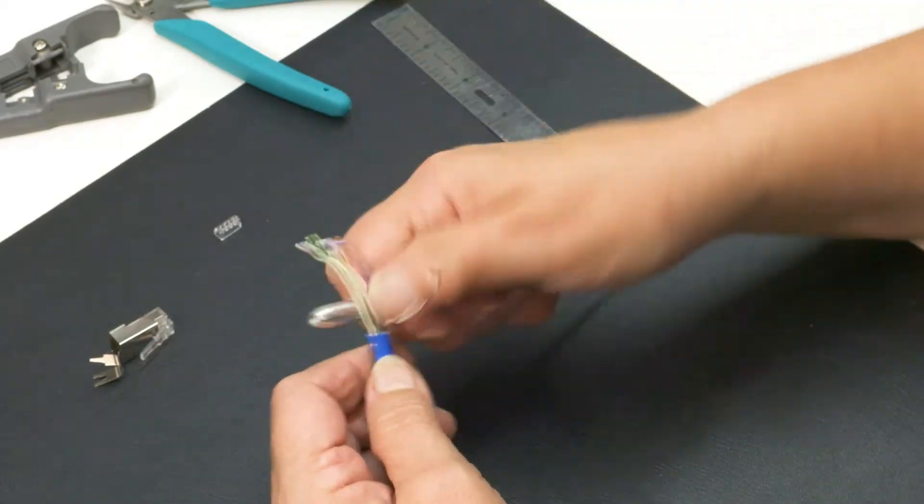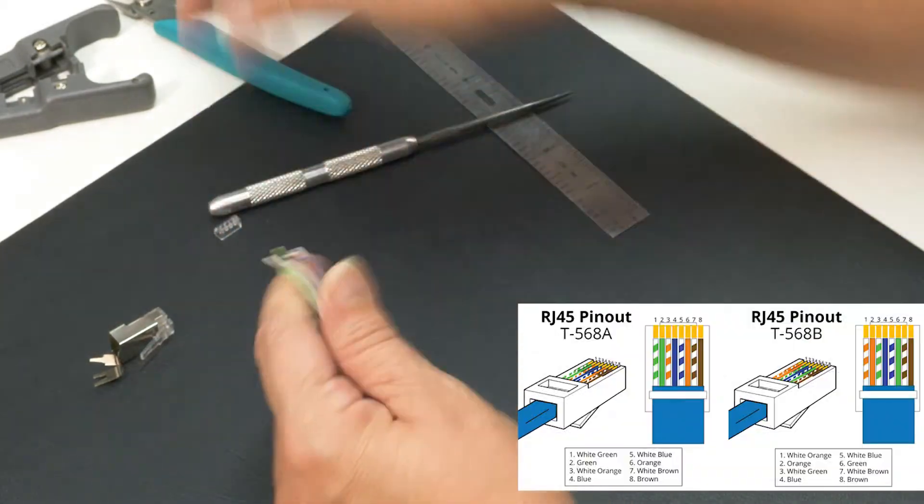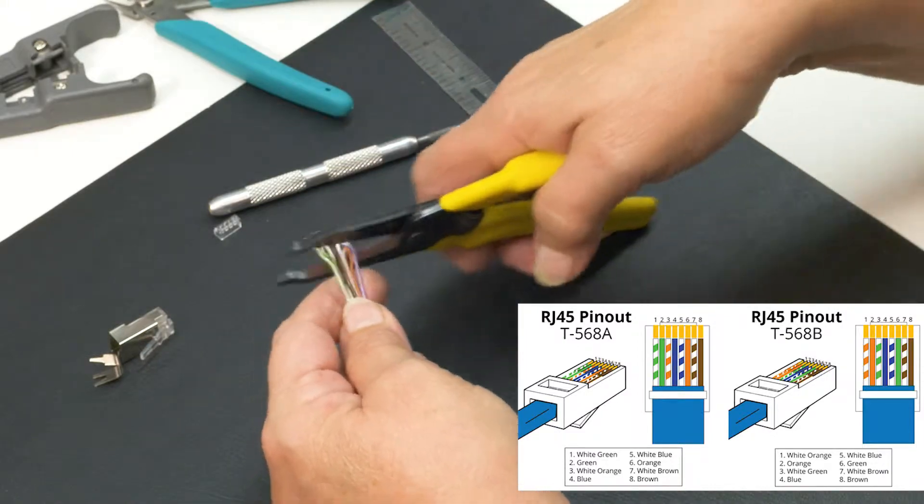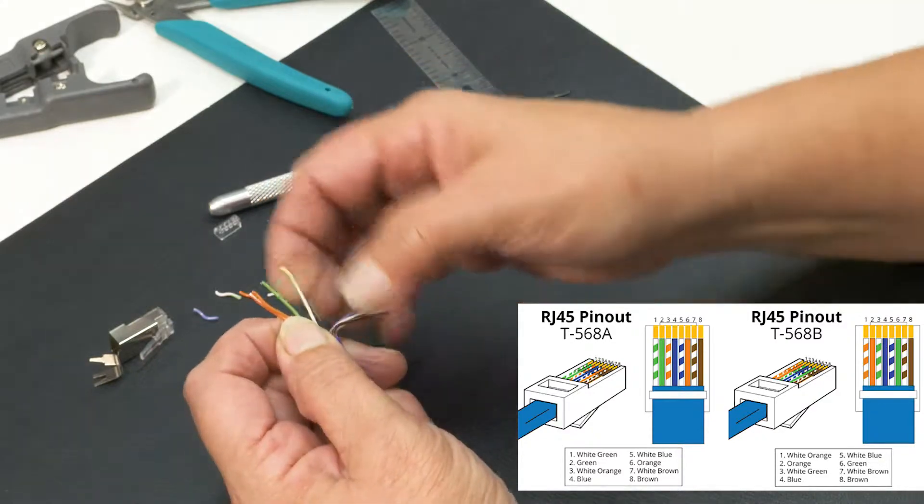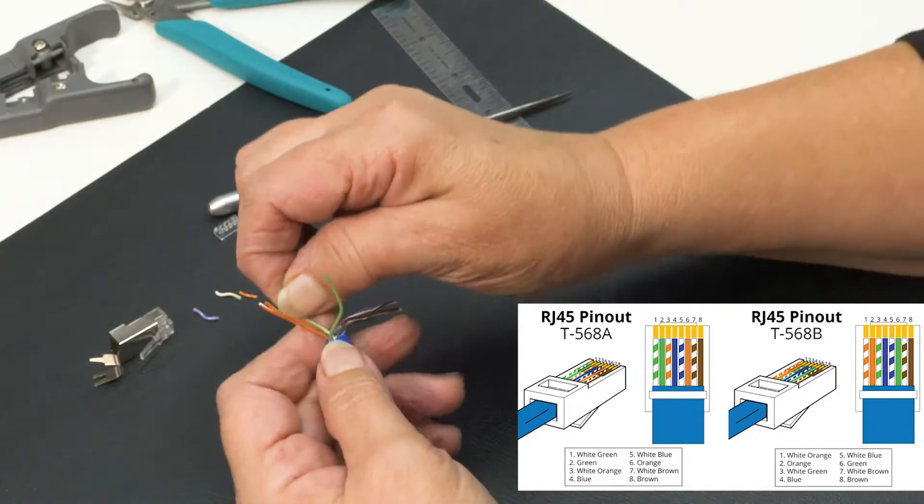Straighten out the conductors as smoothly as possible to get all the twists out. Organize the wires in the proper color code based on the wiring standard you're using. In this case, we're using T568B, which is for commercial and business applications.